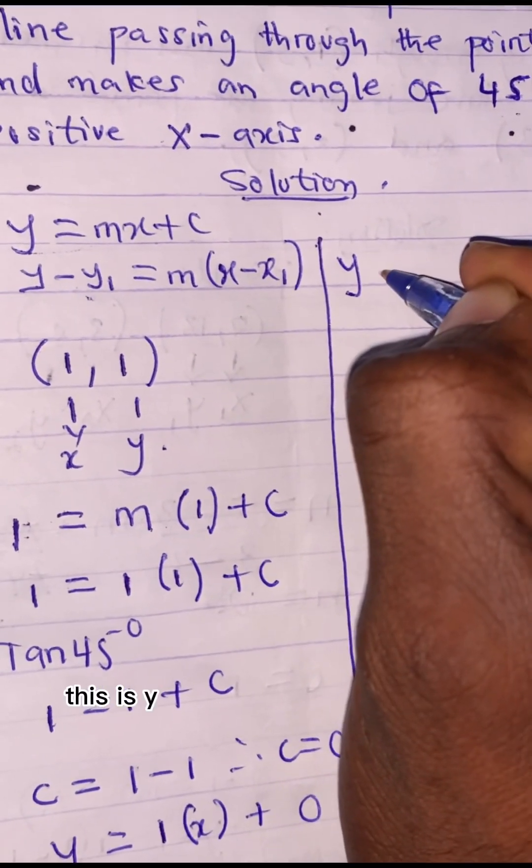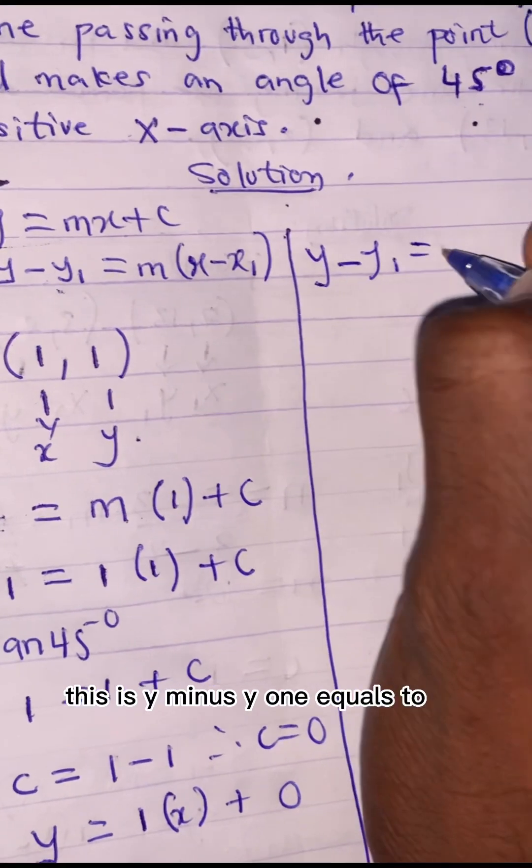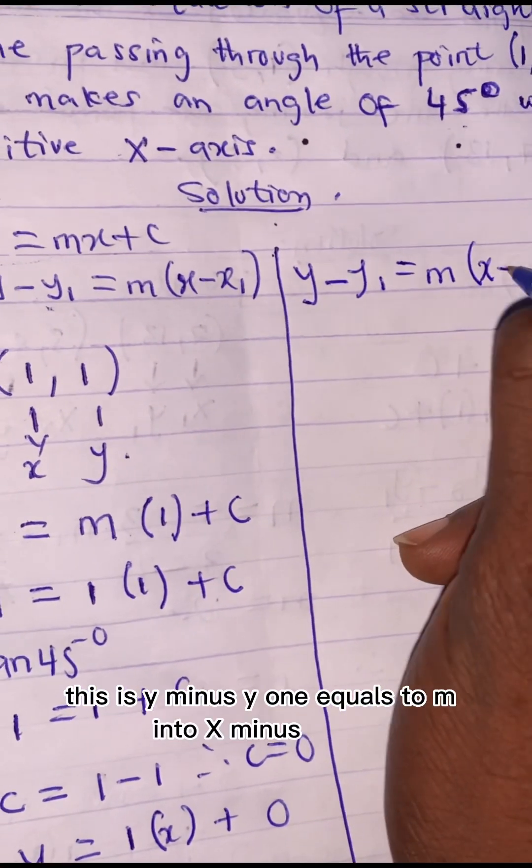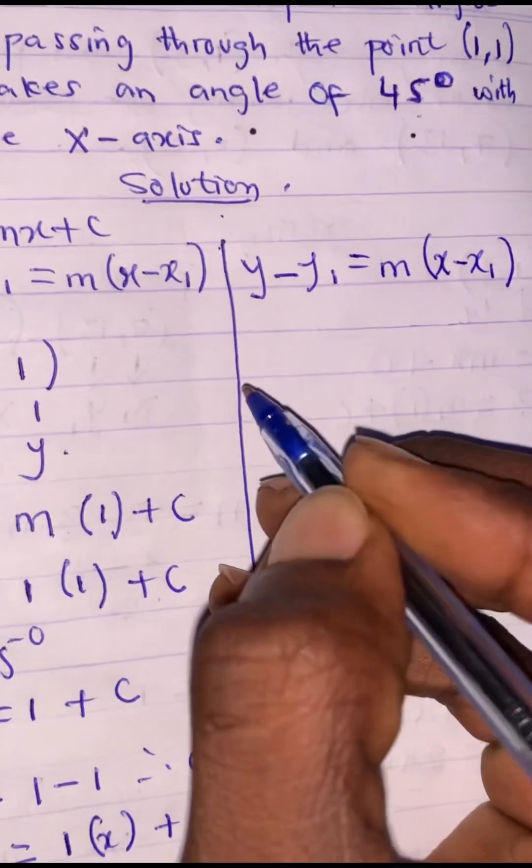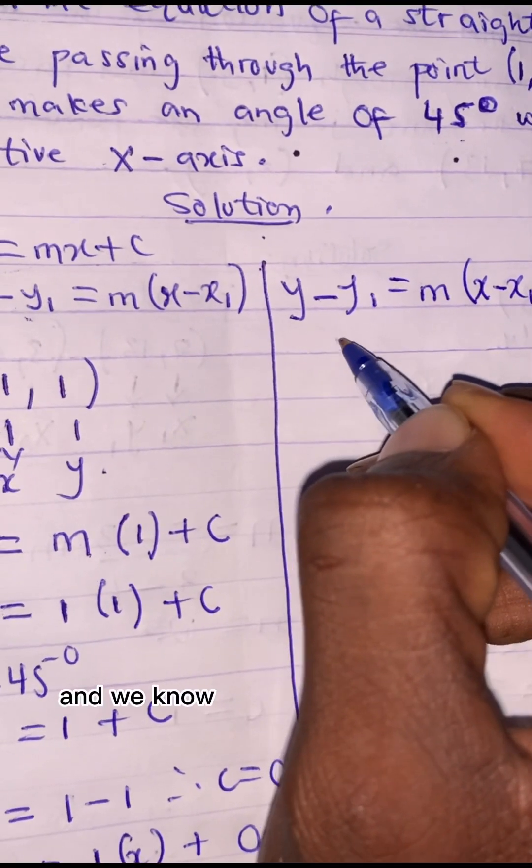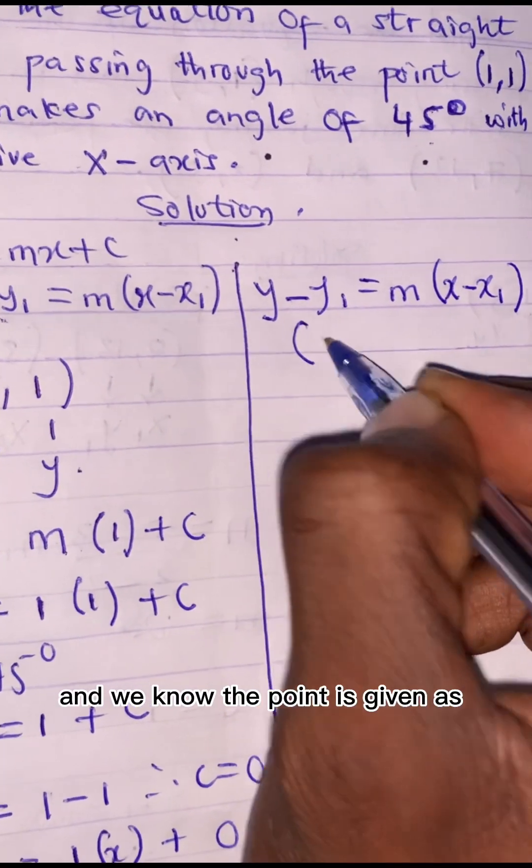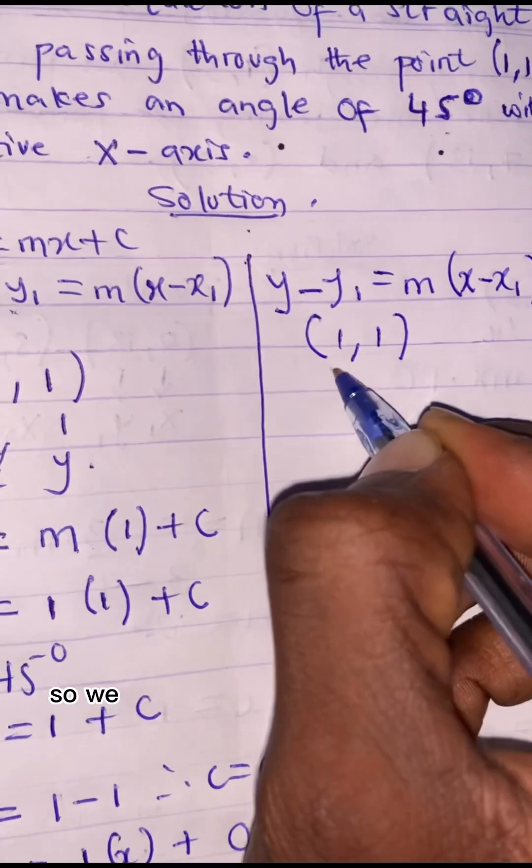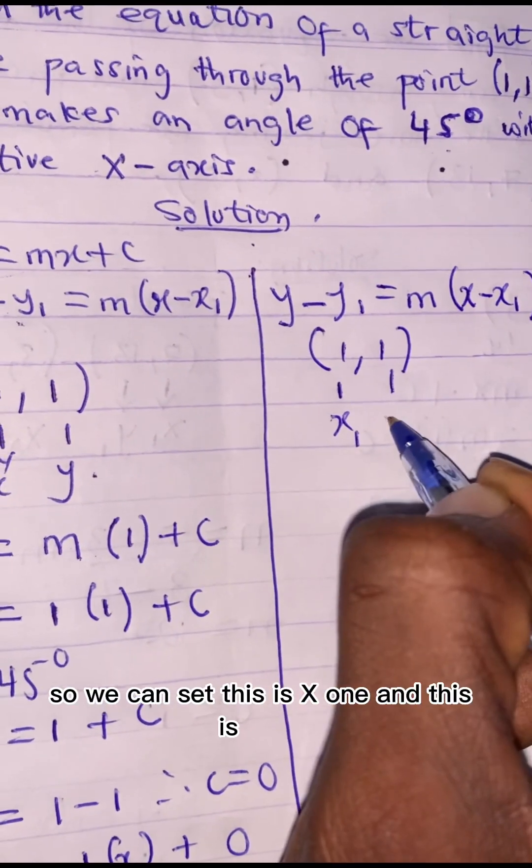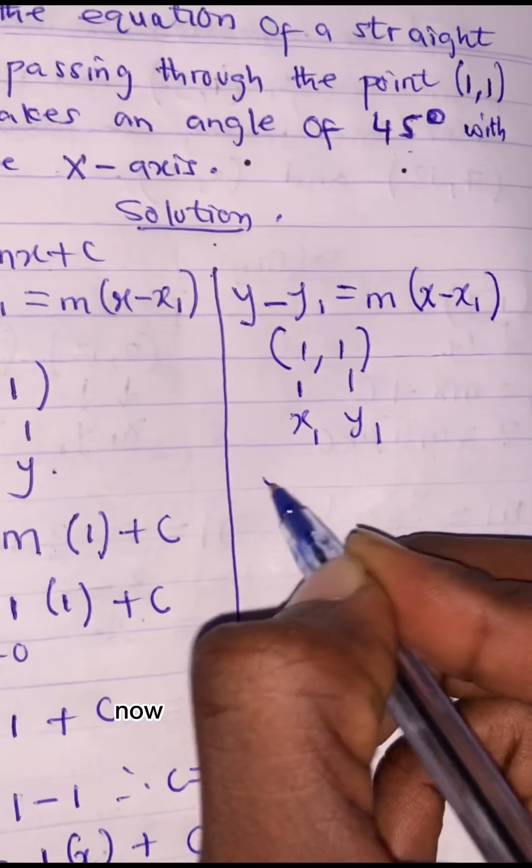This is y - y1 = m(x - x1). And we know the point is given as 1 and 1. So we can set this is x1 and this is y1. Now